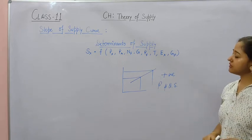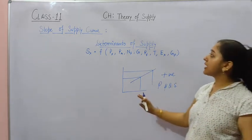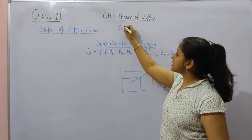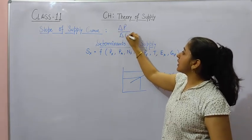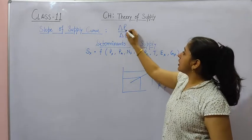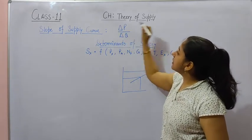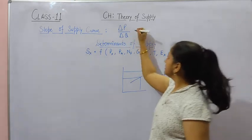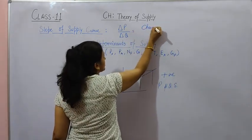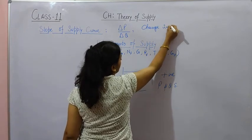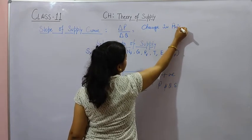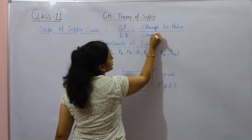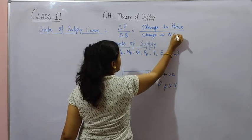The slope of supply curve is a ratio between change in price and change in quantity supplied. This is represented as delta P upon delta Q — change in price upon change in quantity supply.